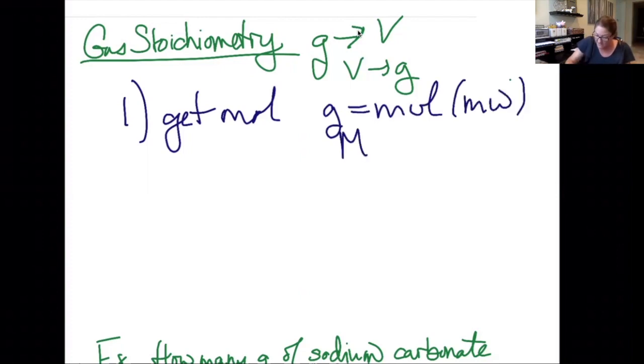We can do molarity equals moles over liters. You now have a third tool in your arsenal, which is PV equals nRT, as another way of getting moles.